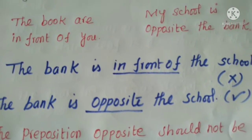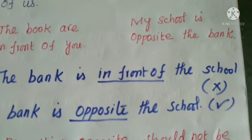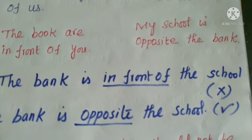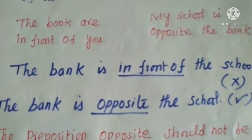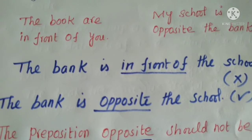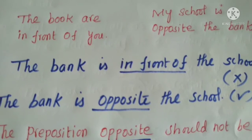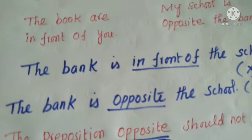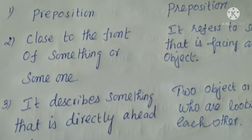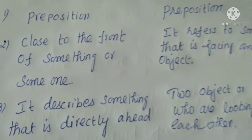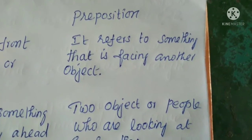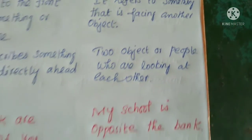Another example: 'The bank is in front of the school' — meaning the bank is close to the front of the school. 'The bank is opposite the school' — meaning the bank is facing the school from the other side. 'In front of' means close to the front of something or someone; 'opposite' refers to something facing another object.